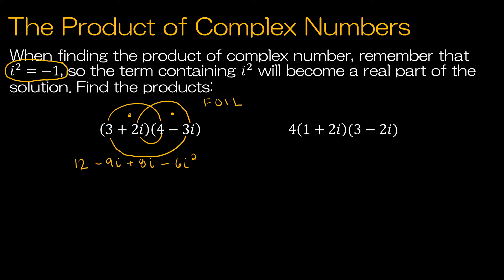From here, the negative 6i² — I'm going to go ahead and rewrite this. I'm going to combine negative 9i and positive 8i to get minus i. Then this term is negative 6, but i² is negative 1, so really what I have is positive 6. So I'm adding 6, which means my final solution is 12 plus 6, or 18, and then minus i.